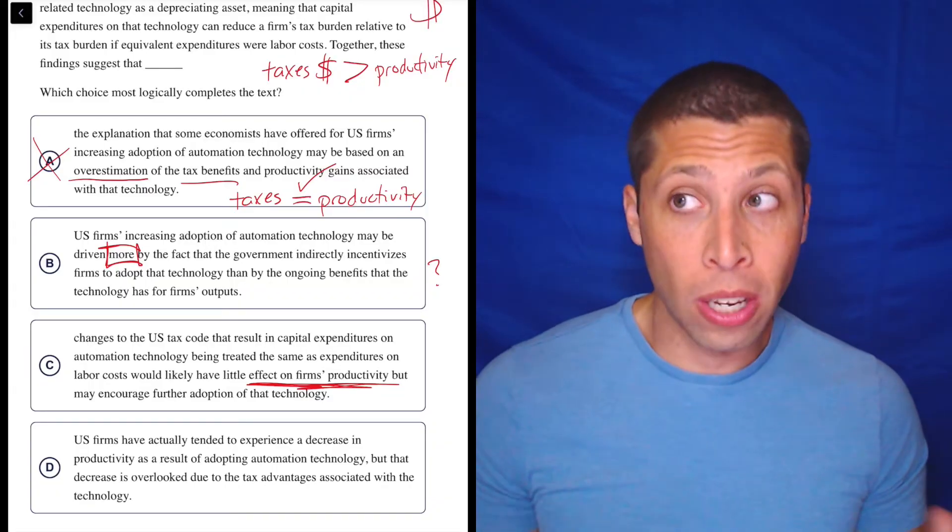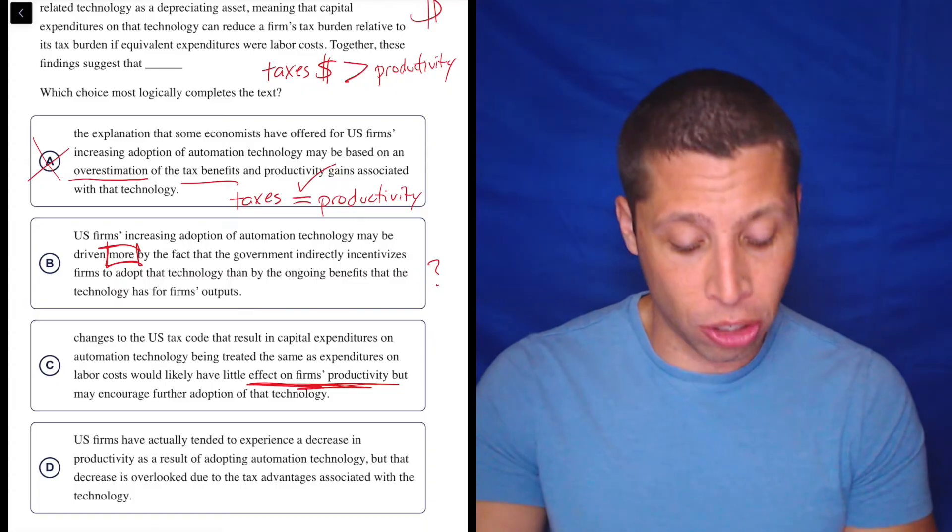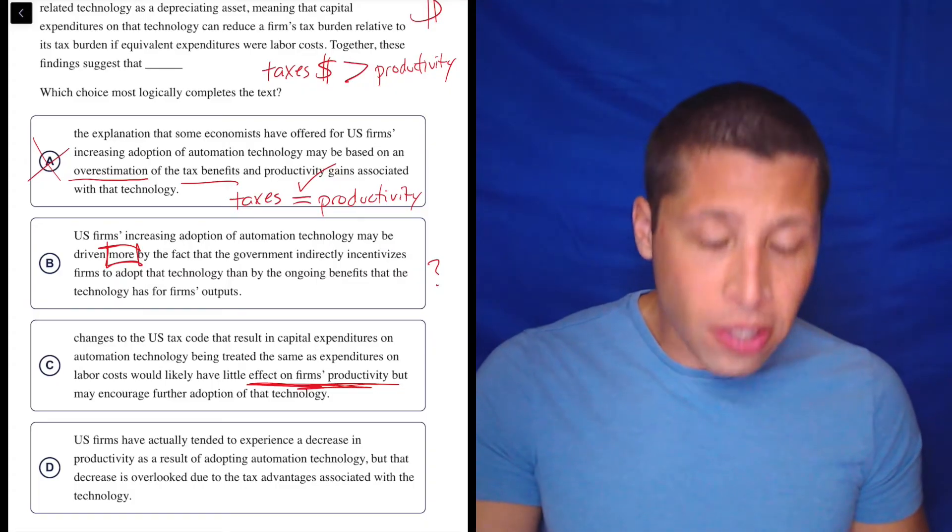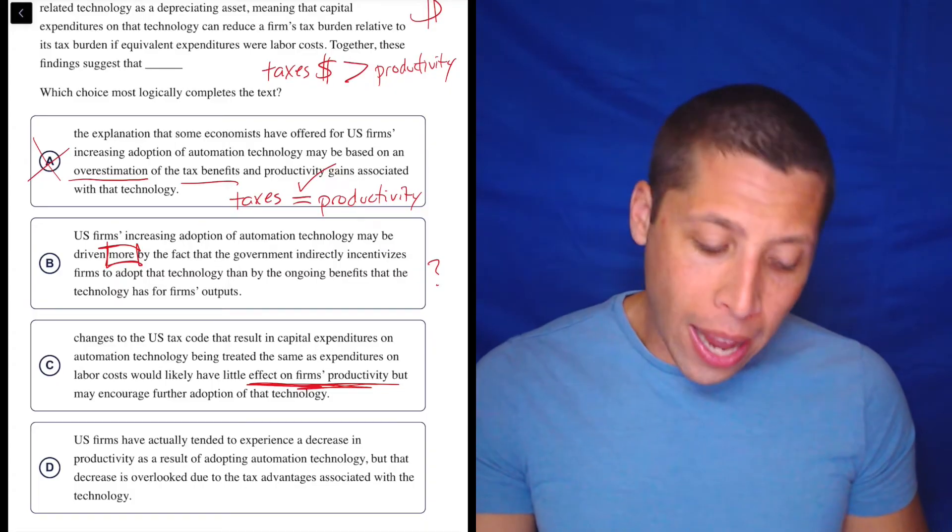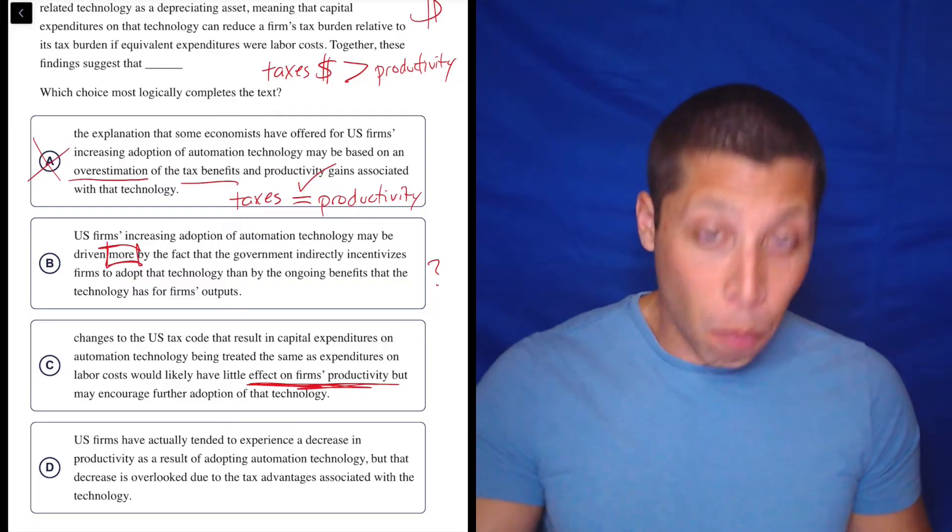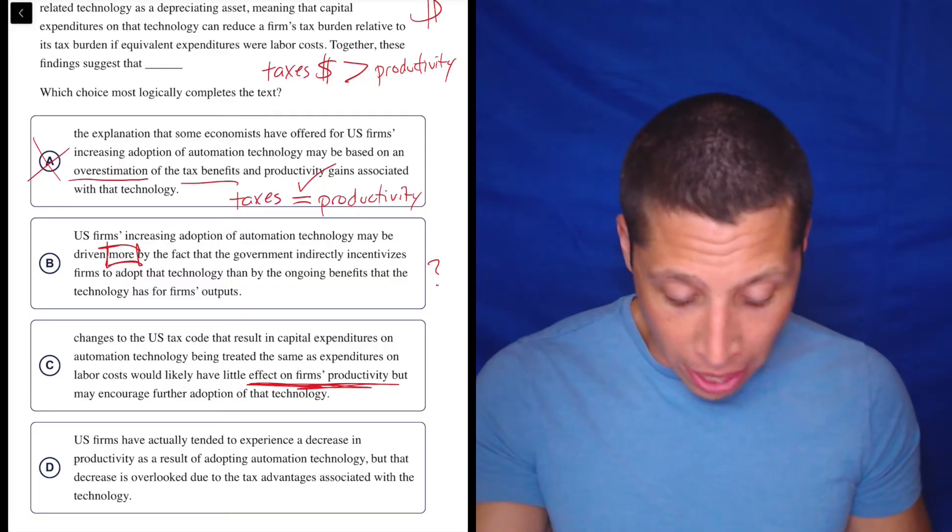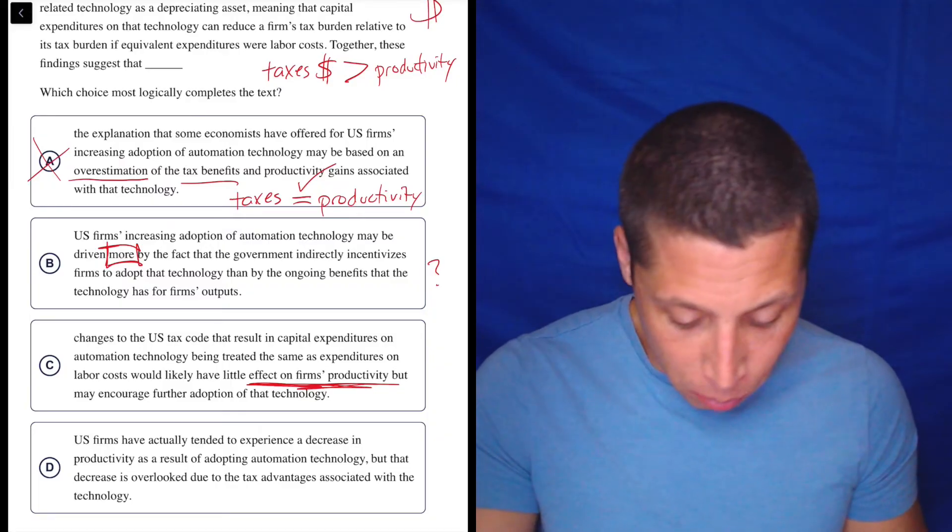They're not saying how we can make it better, how we can make it worse. That didn't happen in the passage. So this is definitely a confusing choice, but I'm not getting that kind of like more that I want that I got in choice B.